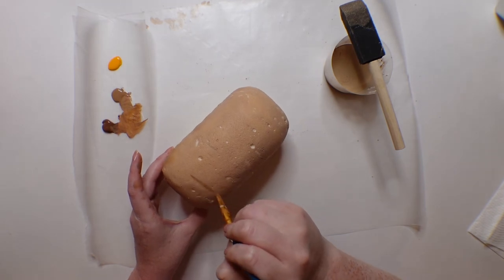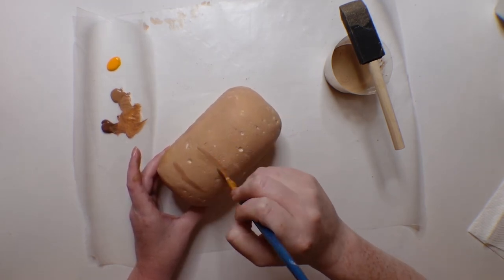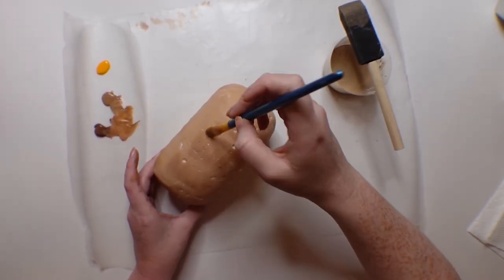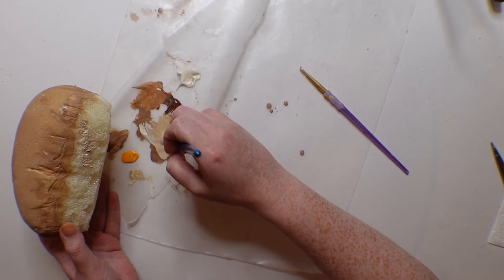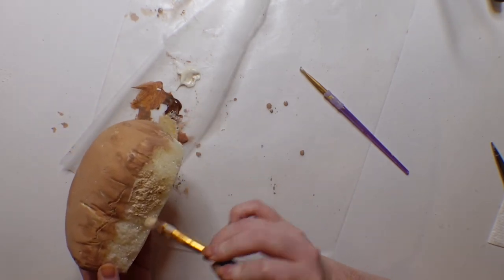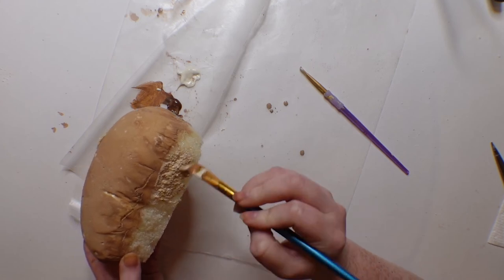And now for the sides. These would have been inside the tin so they won't have gotten as brown, so I like to mix up a little bit of a lighter color for this part.